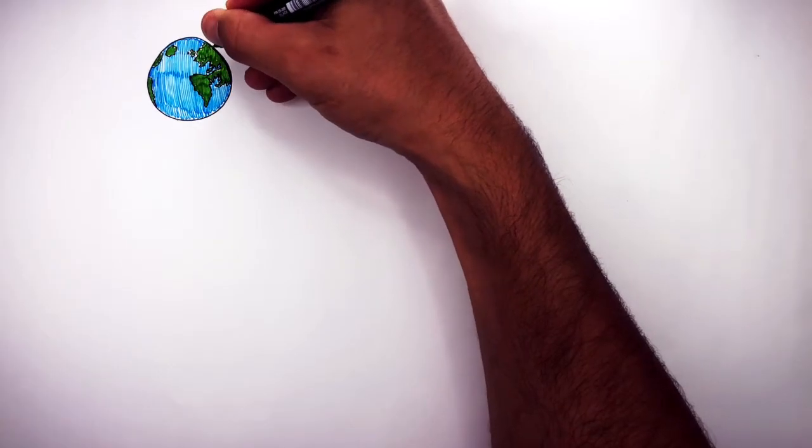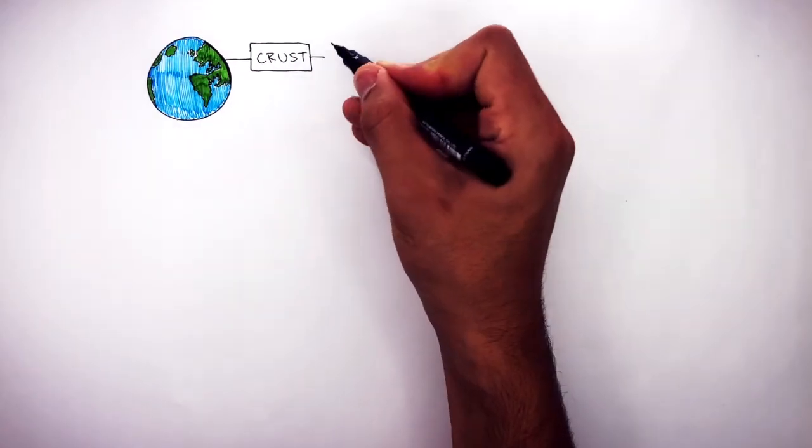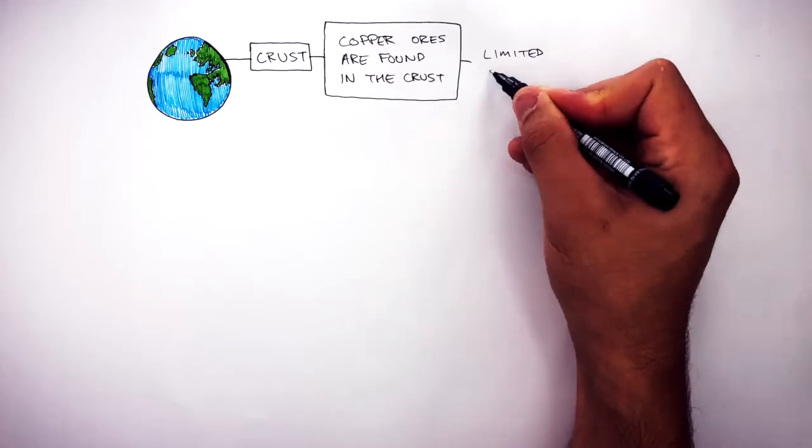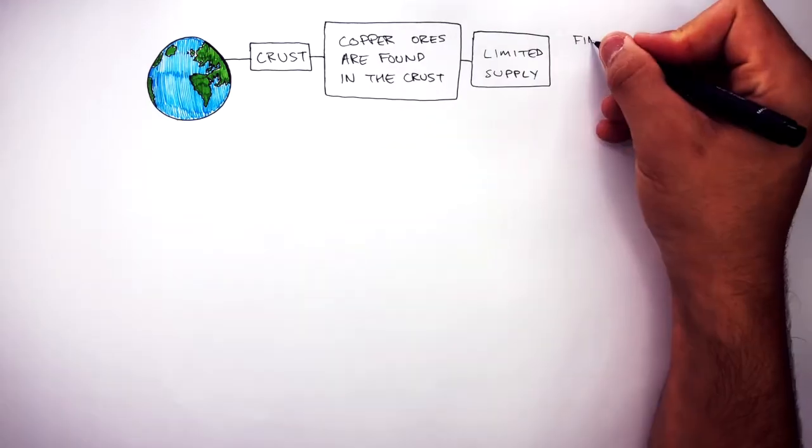Here is a diagram of Earth, and this black line shows where the crust is. Copper ores are found in the crust. There is a limited supply, as copper ores are a finite resource.